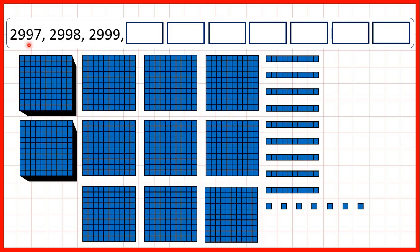So now this time, we start with 2997 — that's 2 thousands, 9 hundreds, 9 tens and 7 ones. Then we have 2998, 2999, and adding another one gives us 3000.